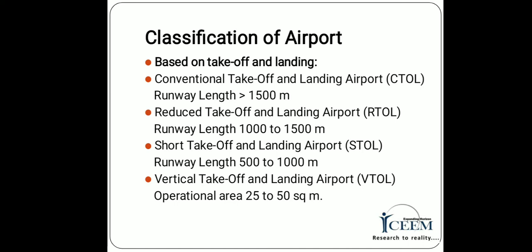Next is Classification of Airports based on takeoff and landing of aeroplanes. The first type is Conventional Takeoff and Landing, in which the runway length is greater than 1500 meters. Next is Reduced Takeoff and Landing, in which the runway length is 1000 to 1500 meters. Third is Short Takeoff and Landing. Fourth is Vertical Takeoff and Landing, in which the operational area is 25 to 50 square meters.